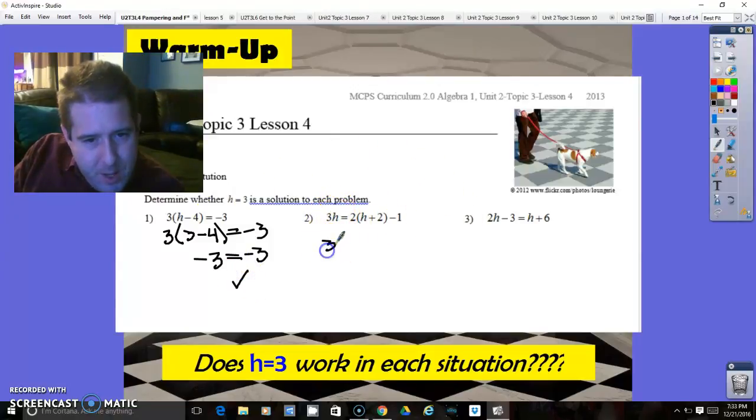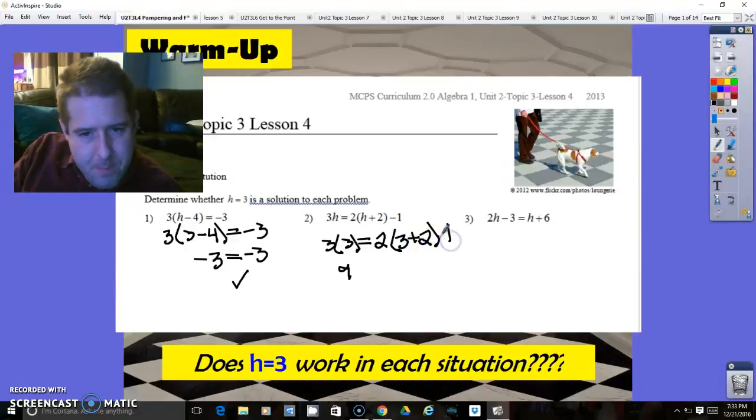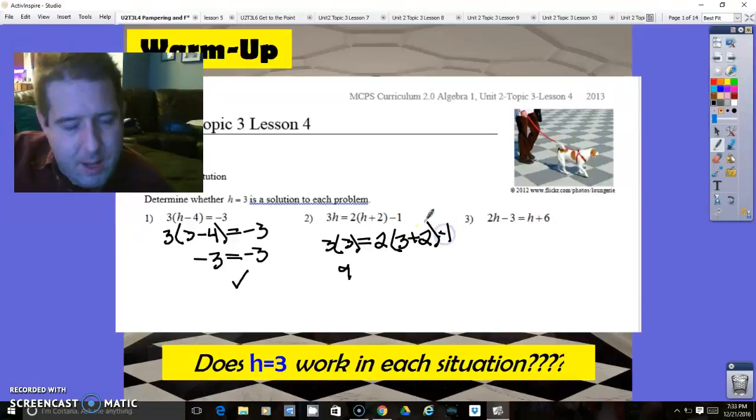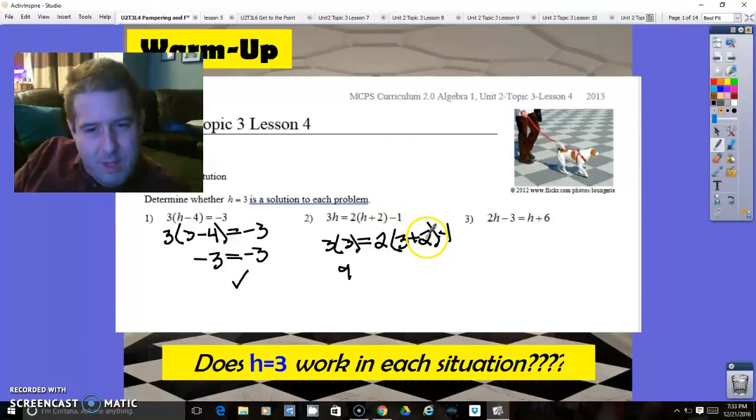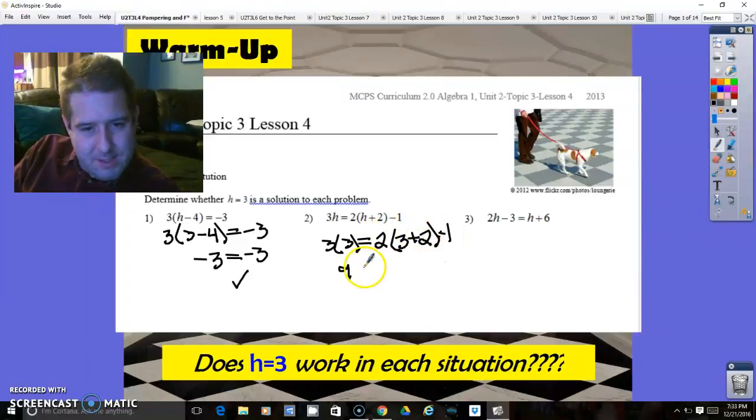3 times 3 on this side equals 9. And 2 times 3 plus 2 minus 1. So you've got to do what's in the parentheses first. 3 plus 2 is 5, 5 times 2 is 10, 10 minus 1 is 9. That one is also true.